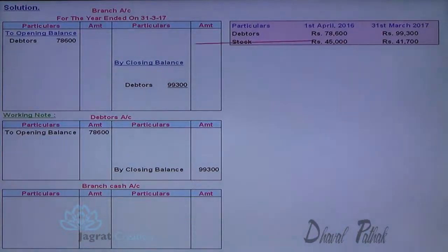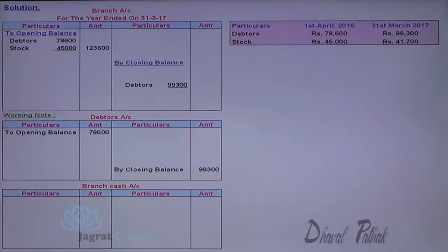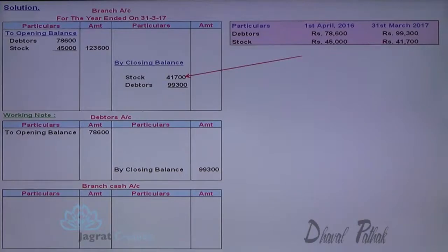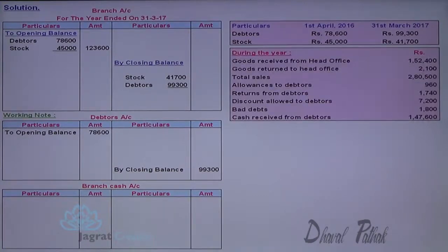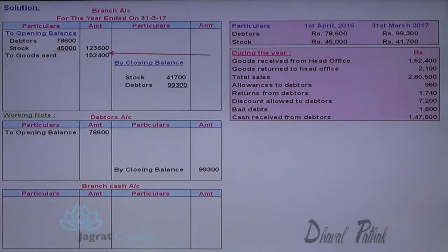Stock given to the branch at the beginning of the year — branch account debit to stock account. Whatever stock is left with the branch at the end of the year is taken away by the head office in its books of accounts — stock account debit to branch account credit. Goods received from HO means goods sent to branch — branch account debit to goods sent to branch account credit. When goods are returned, the reverse entry: goods sent to branch account debit to branch account credit.